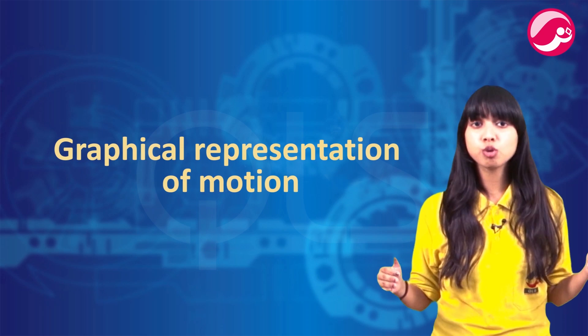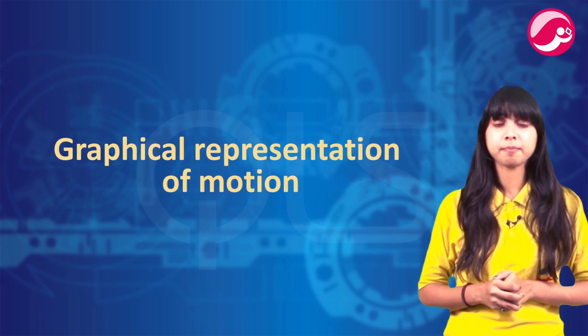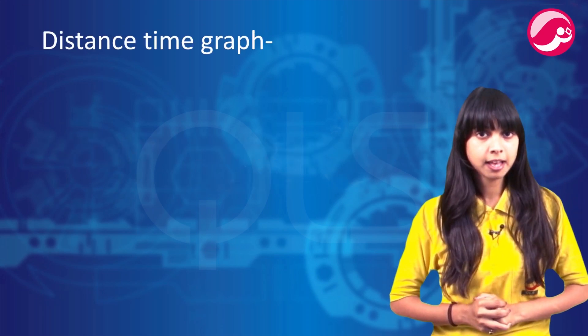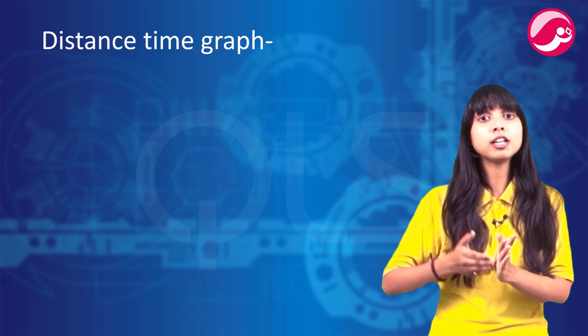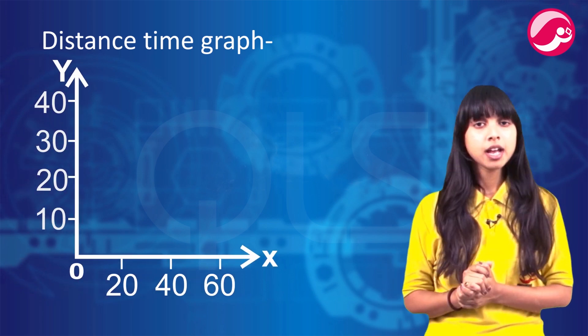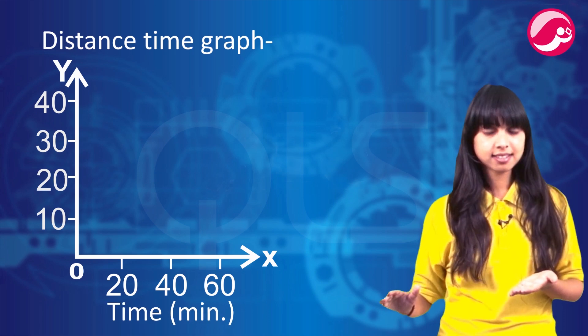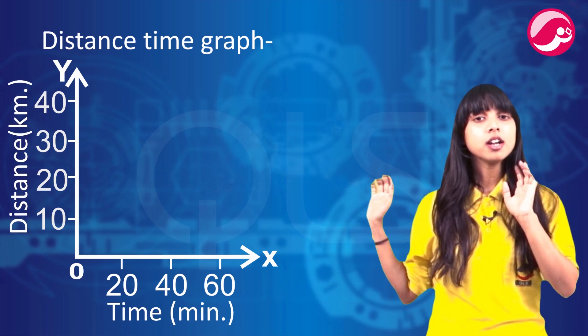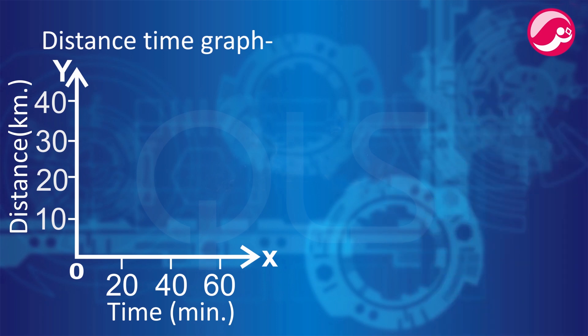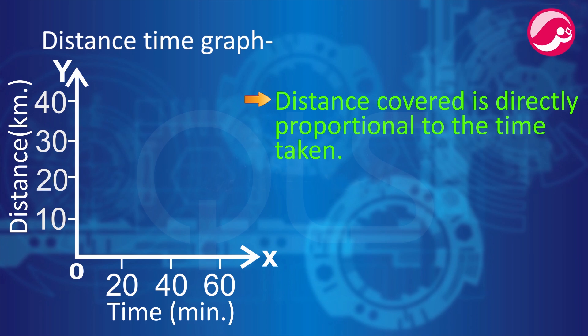Now next topic: graphical representation of motion. This is a very important topic. Distance time graph. The change in position of object with respect to time can be shown here. Time we take on the x axis, and distance we take on the y axis. Now it is observed that distance covered is directly proportional to the time taken.